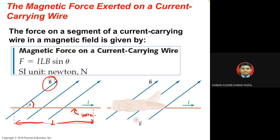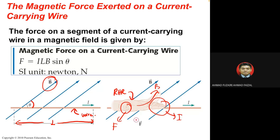We again use the right-hand rule for the direction of magnetic force on a current-carrying wire. The thumb points in the direction of force, the rest of the fingers point in the direction of current, and they bend toward B. Recall i cross B — before it was q(v cross B), now it is iL cross B, so i and B cross each other.